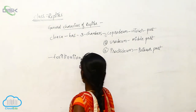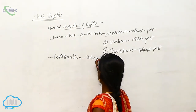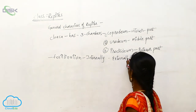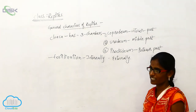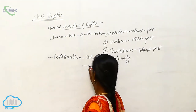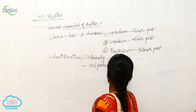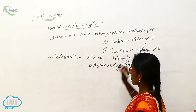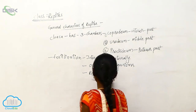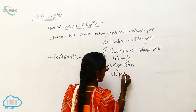Fertilization takes place internally as well as externally. These are mostly oviparous organisms, and also mostly reptiles. However, some reptiles have viviparous organisms.